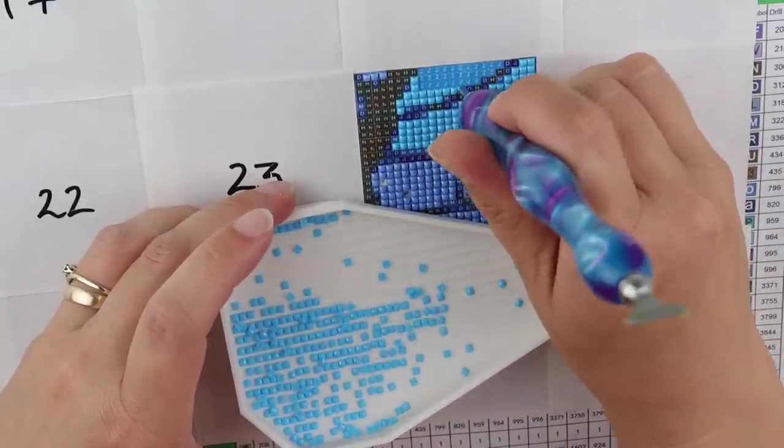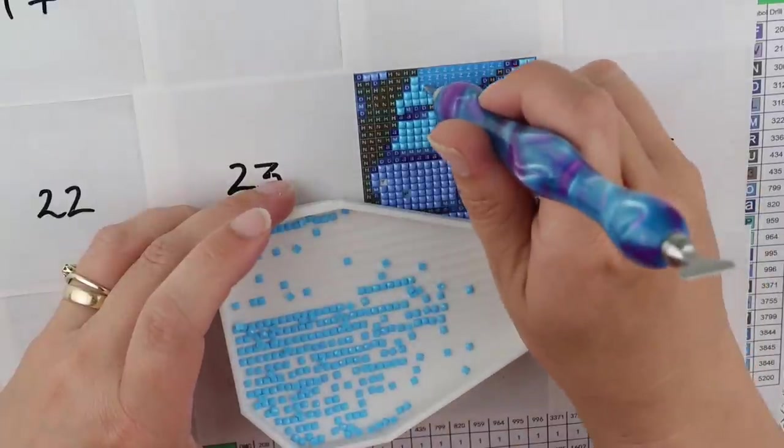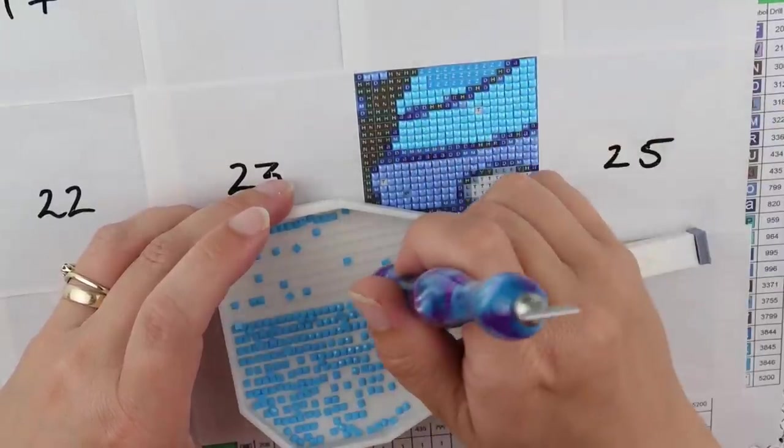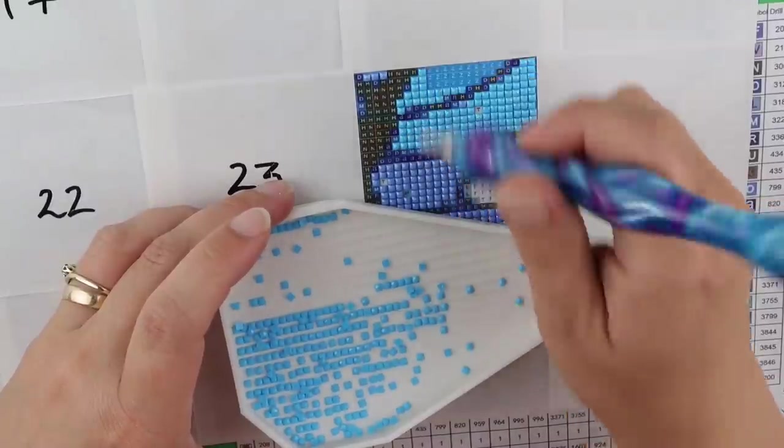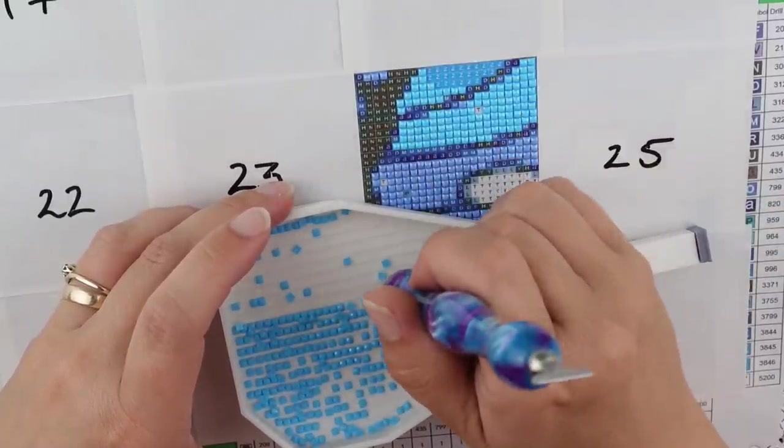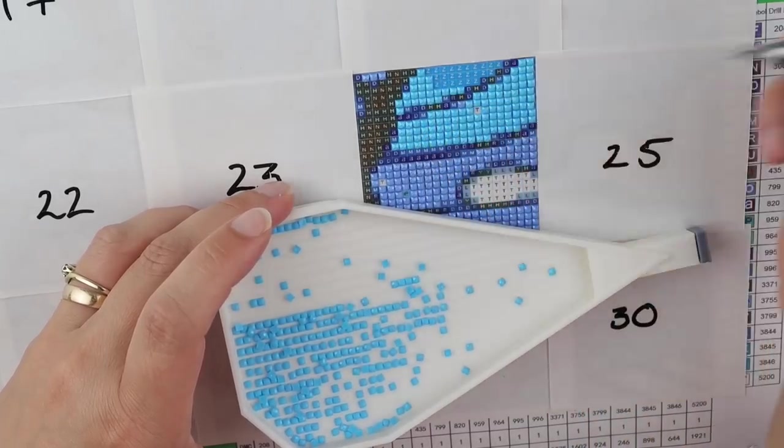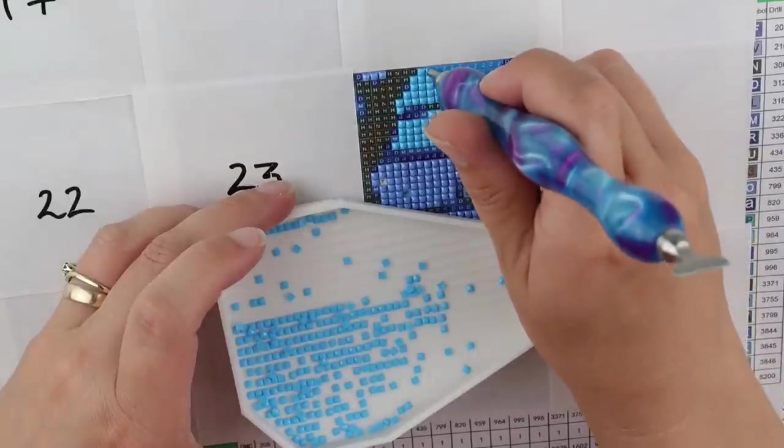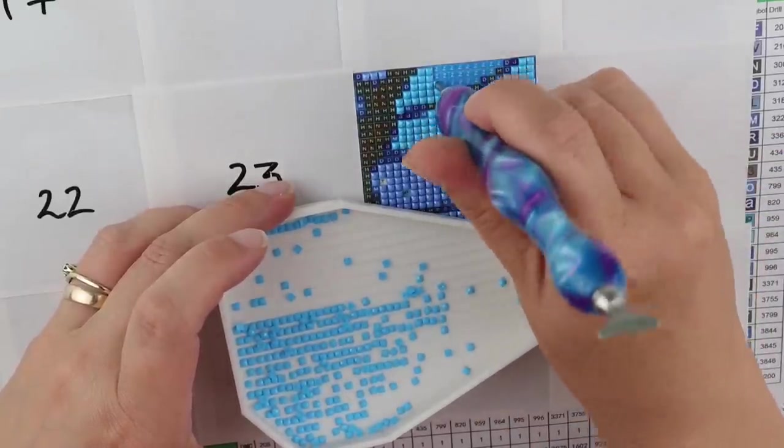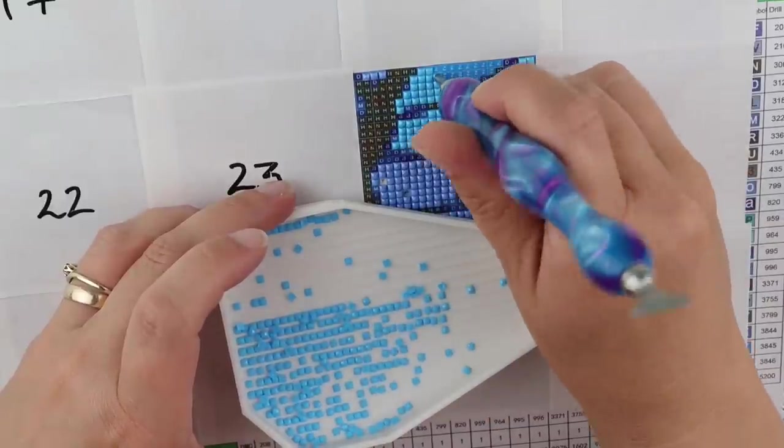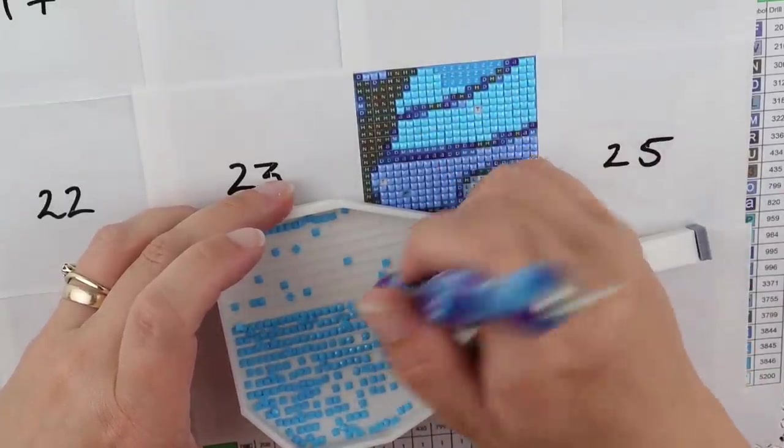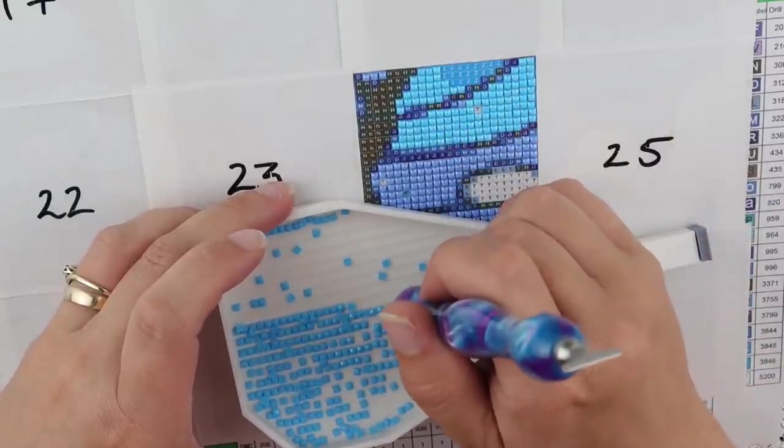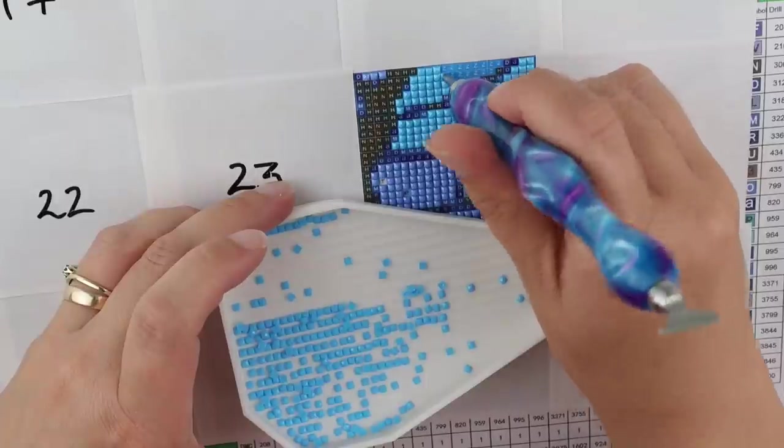But the biggest difference when you're actually diamond painting is if you do place a diamond, halfway in the square or where the round diamond needs to go. You can't really push the diamond into the right place when you're working on double-sided tape, the same way you can when you're working on poured glue. So I will say it's easier with poured glue to move them.